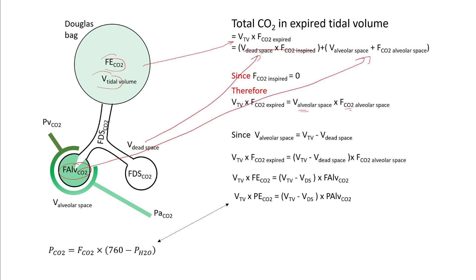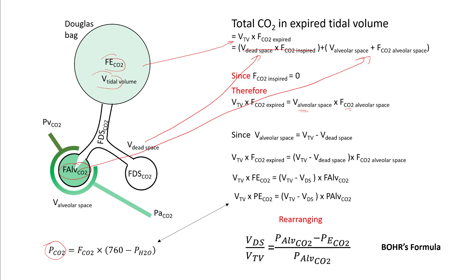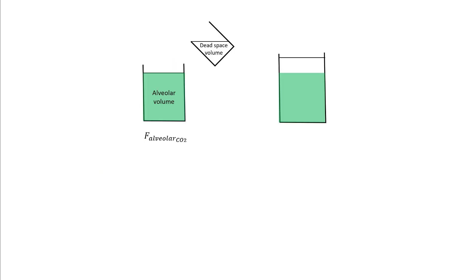We know that the fraction of CO2 is proportional to the partial pressure of CO2 in the alveoli and in the bag. So you can replace the fraction of CO2 with partial pressure of CO2. When you rearrange this equation, Vd/Vt equals P alveolar CO2 minus P end expiratory CO2, divided by P alveolar CO2. This is Bohr's formula that you would commonly see in textbooks.